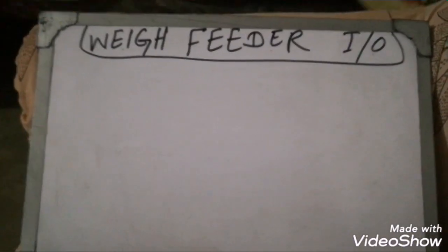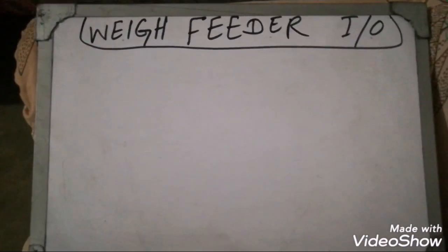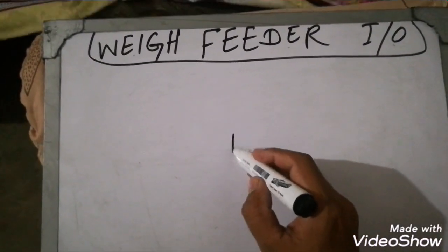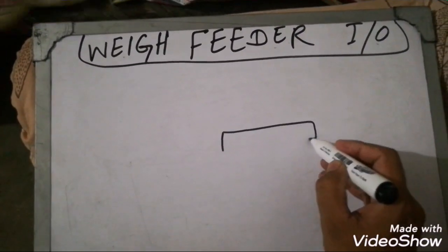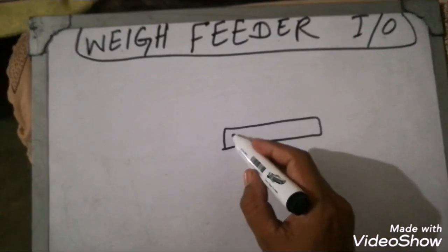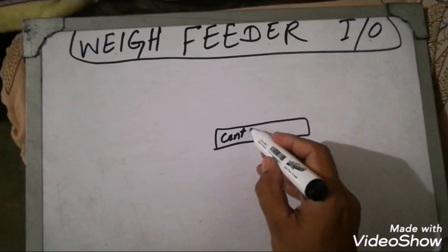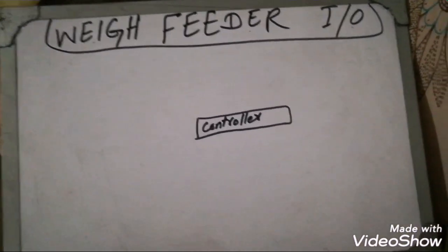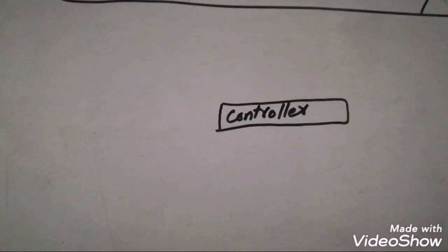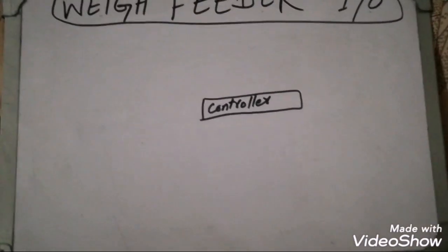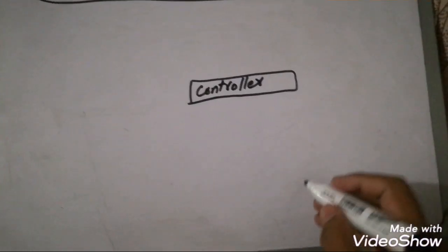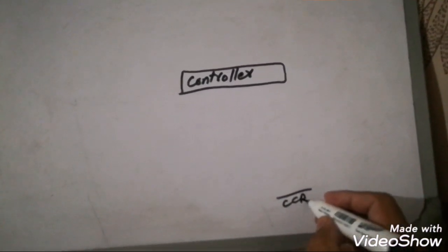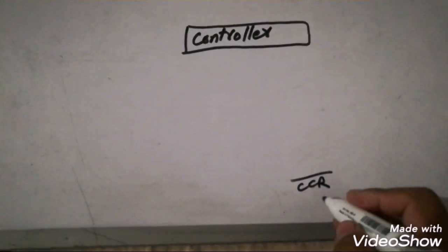This video is about the wave feeder inputs and outputs. We will see what are the wave feeder controller inputs — digital inputs, digital outputs, analog inputs, and analog outputs. We will look at the main inputs and outputs of a wave feeder controller.